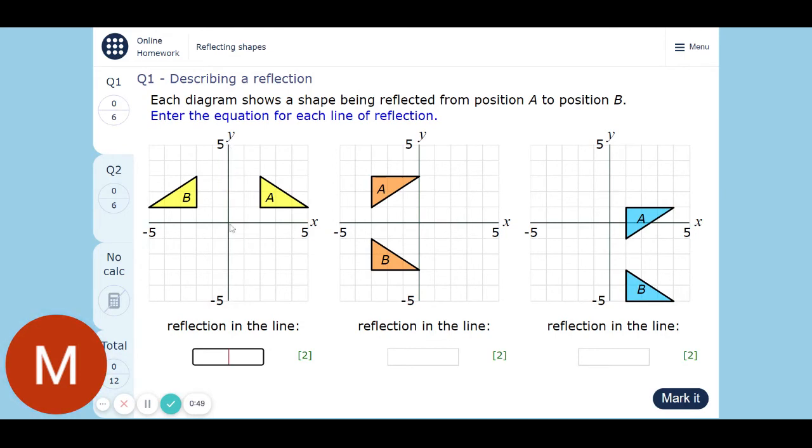Now this line is called the y-axis, but because it wants the equation not just the name for the line, we've got to remember that this line's got another name. So it cuts through the x-axis at zero, so it is x equals zero.